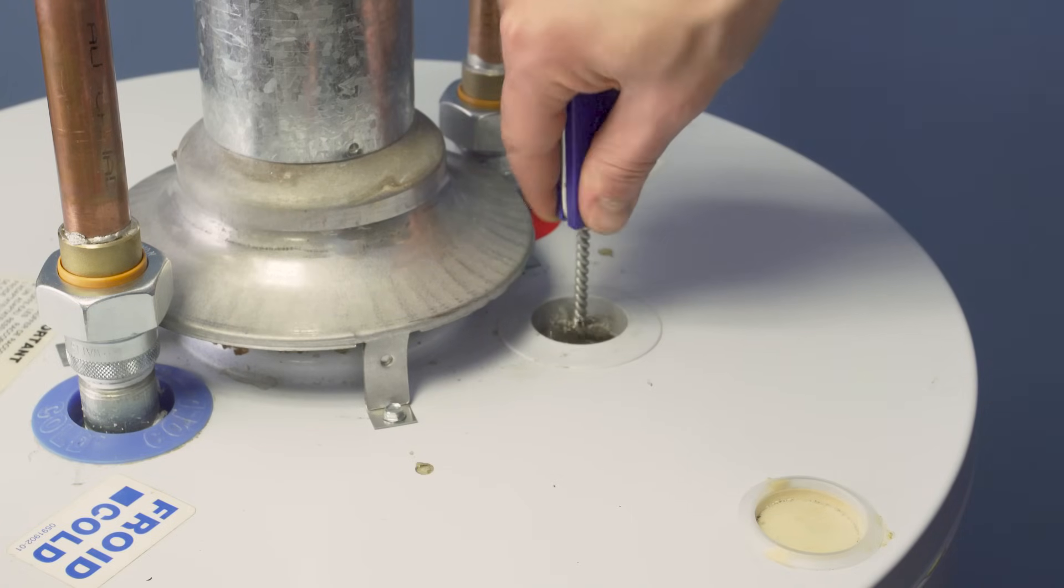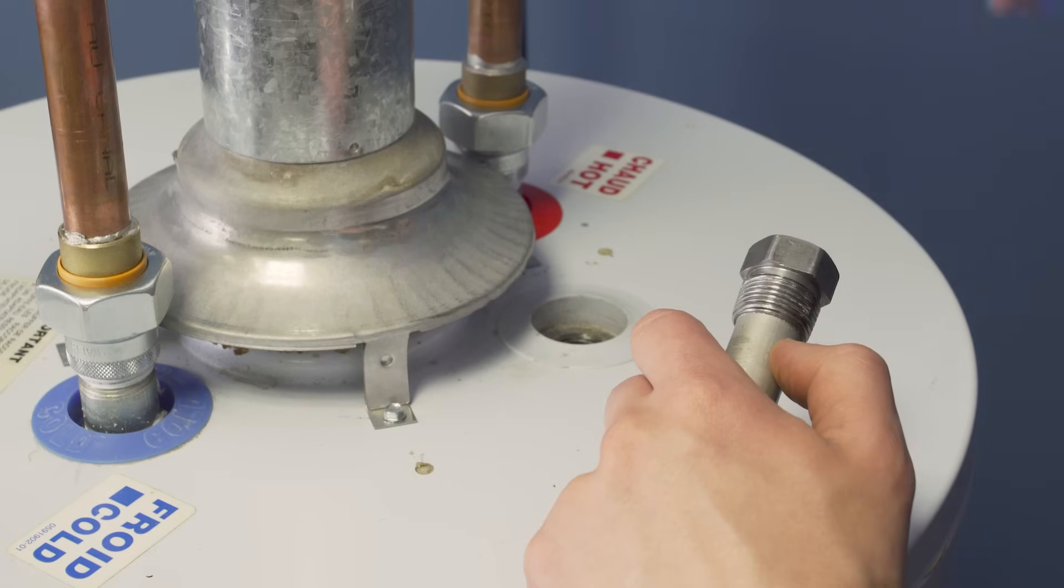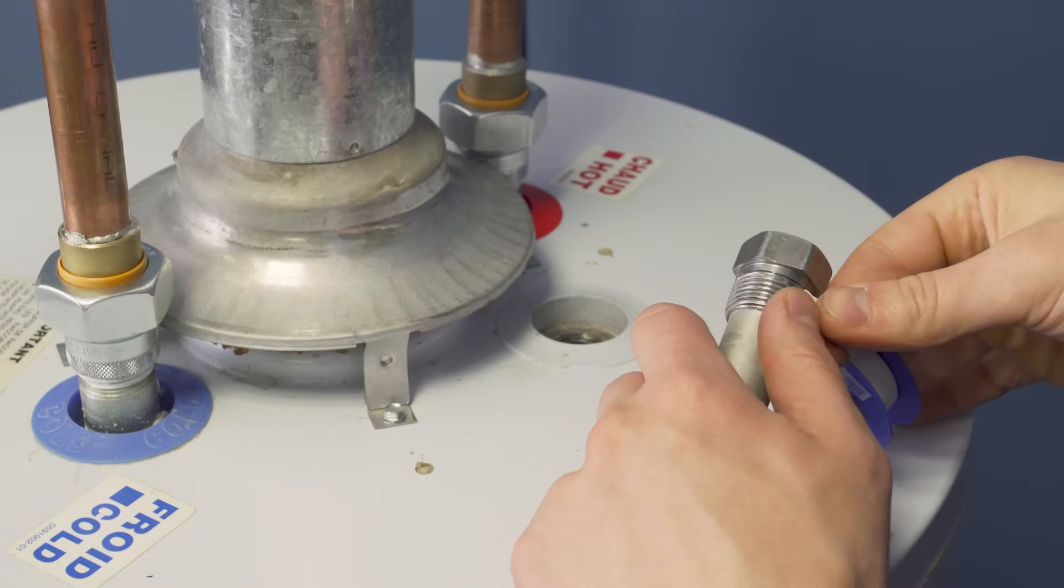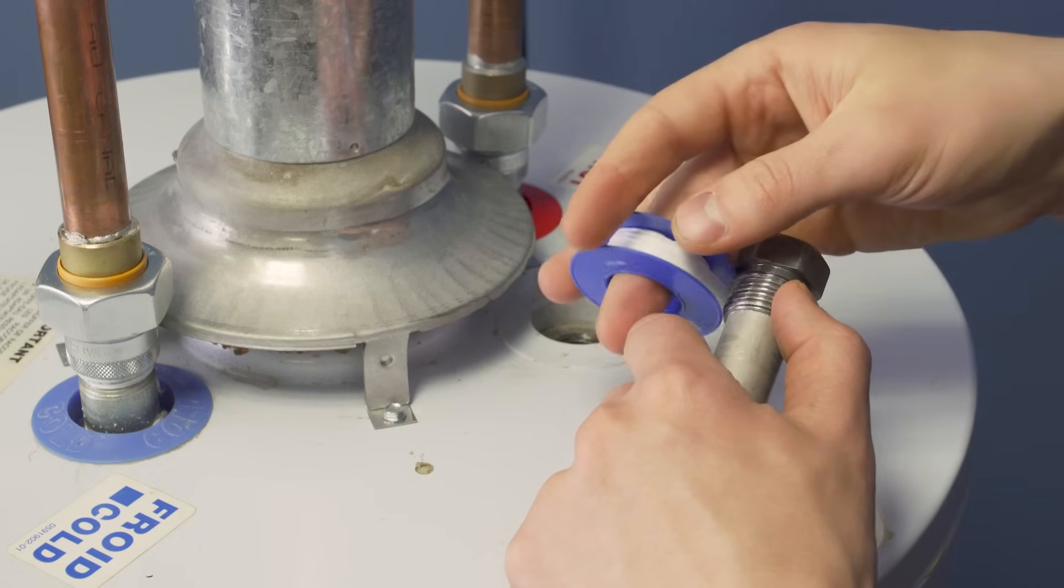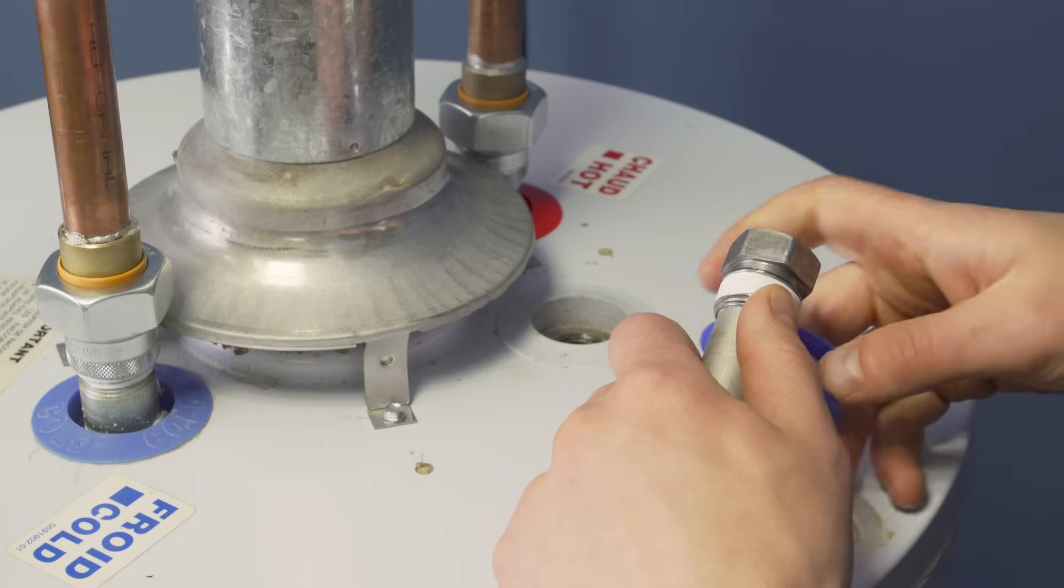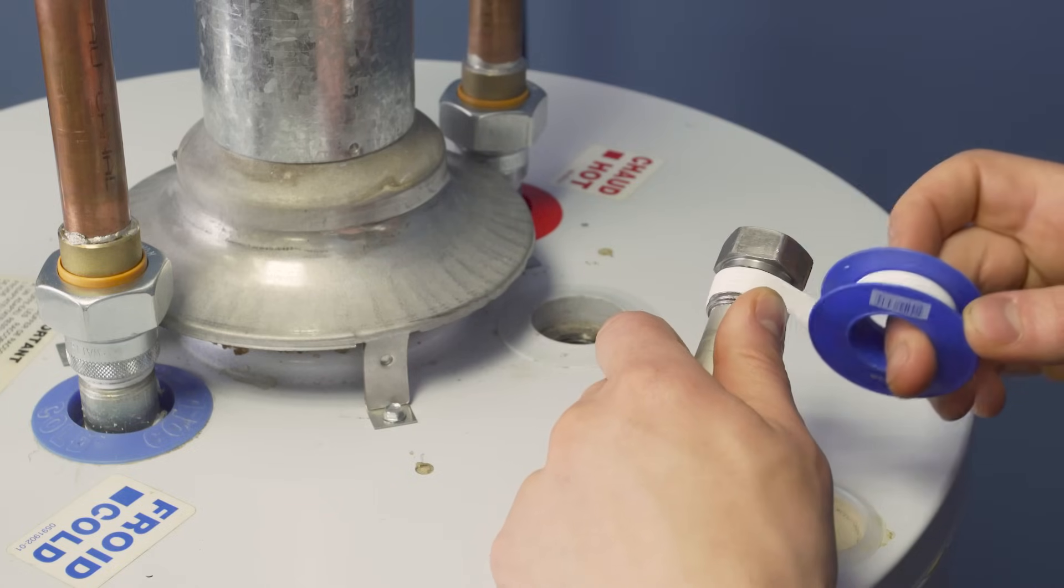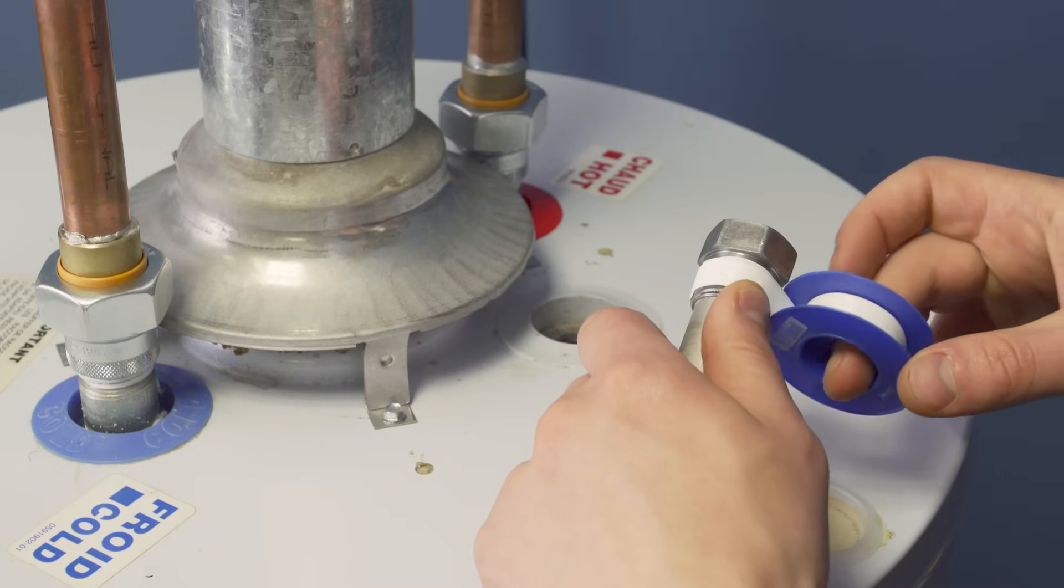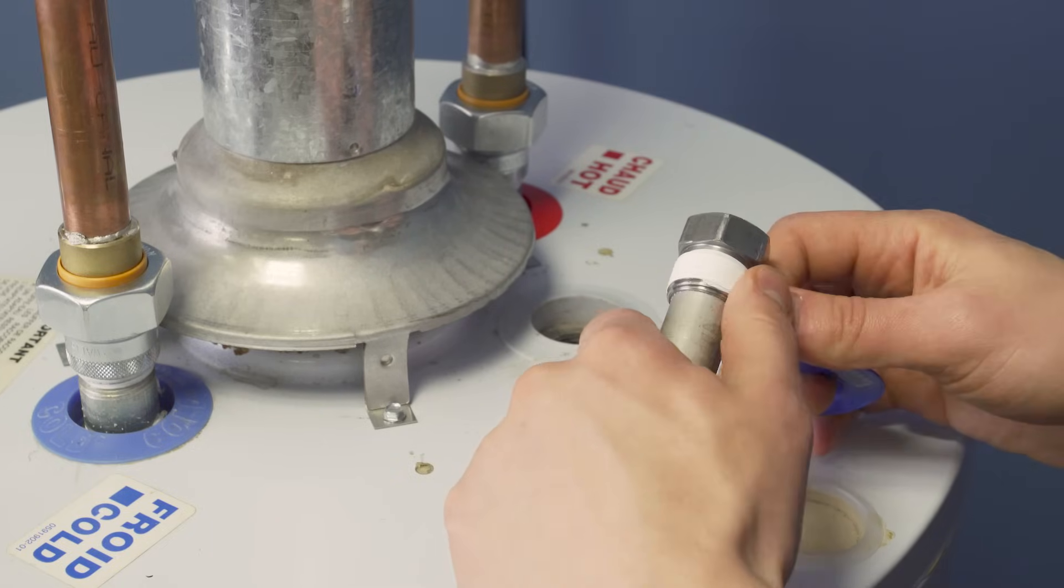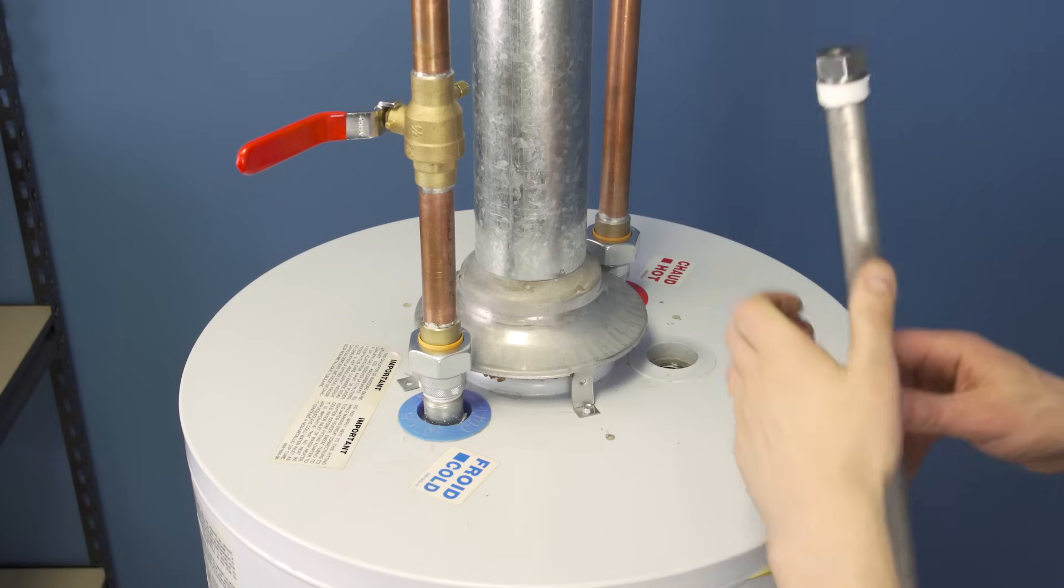To get a good seal, it's best to clean up the threads with a wire brush. Next apply the teflon tape. This will help seal the threads and make it easier to remove and check the rod. Looking at the threads, tape is always applied in a clockwise direction, so that the tape stays on when tightened. Wrap 3 to 6 times, keeping it tight the whole way through. Leave the last part of the thread bare to prevent any tape from breaking off into the tank.